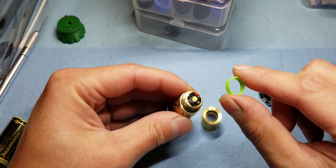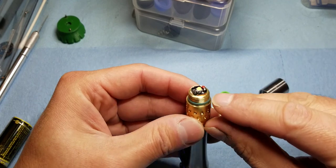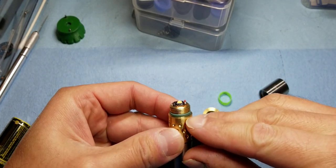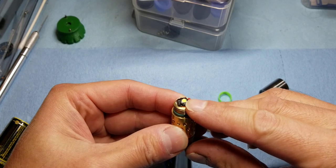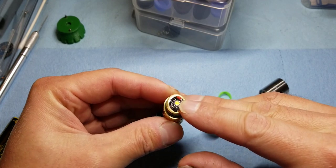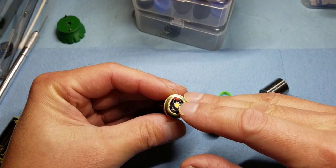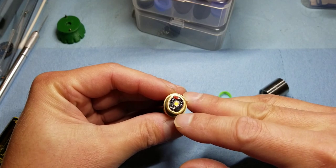This is the mule trim ring. You'll set that aside. Notice that the emitter has a dome over it. Be very careful not to damage this dome while you've got the light open.